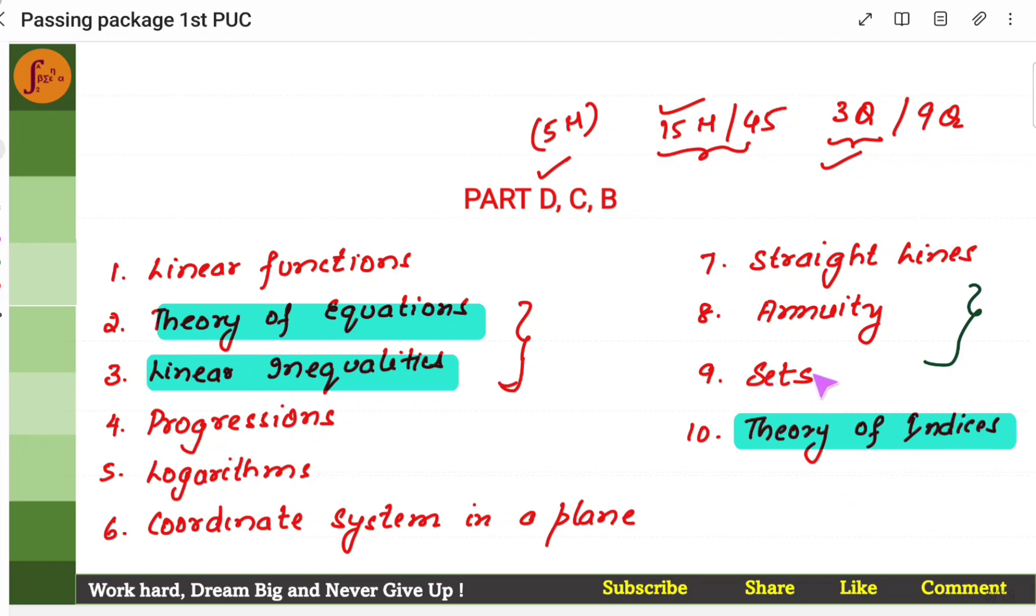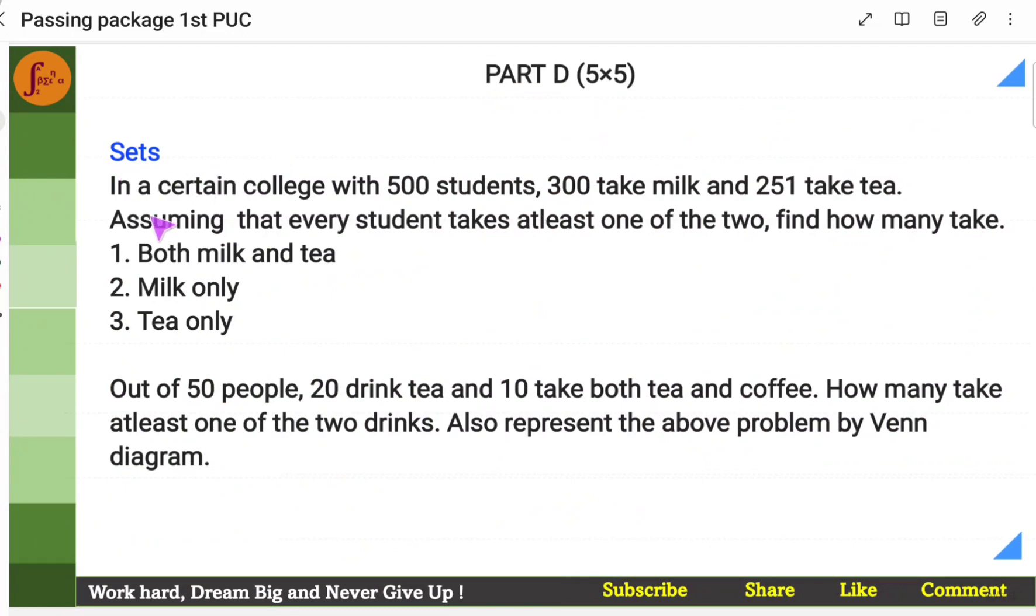Sets, of course. Sets is an easy one. Annuity, averages, all these are simpler ones. But focus has to be put on progressions, logarithms. Especially in logarithms, problems could be lengthy, but this is an important chapter in terms of scoring high marks. So, in part D, we have sets. In sets, we could get prompts where we'll have to find intersection, union. You have different kind of prompts. Different examples are given here. These are only examples, just to tell you what kind of prompt types we need to focus more on.